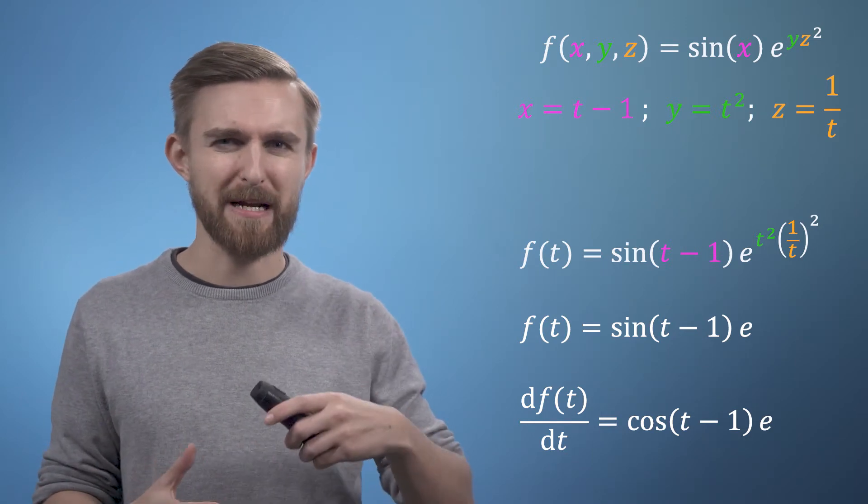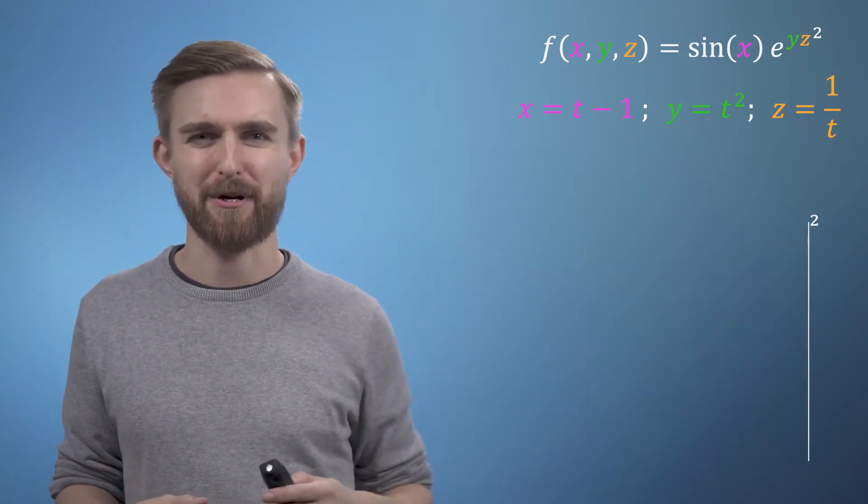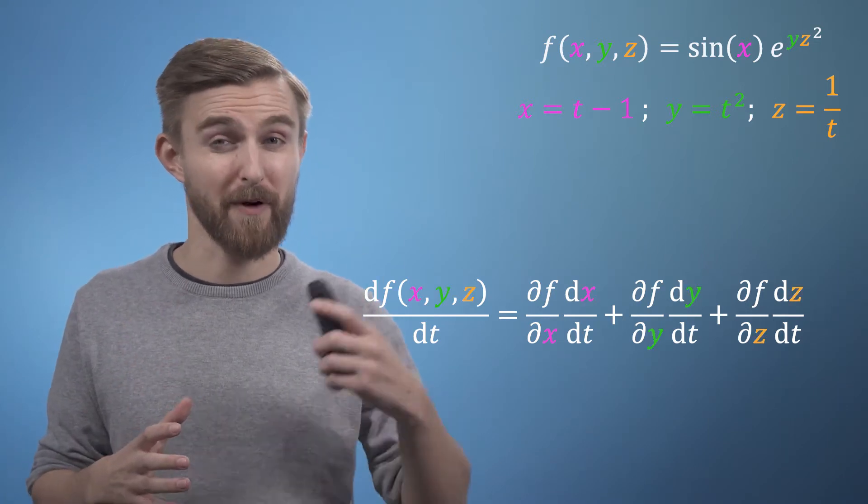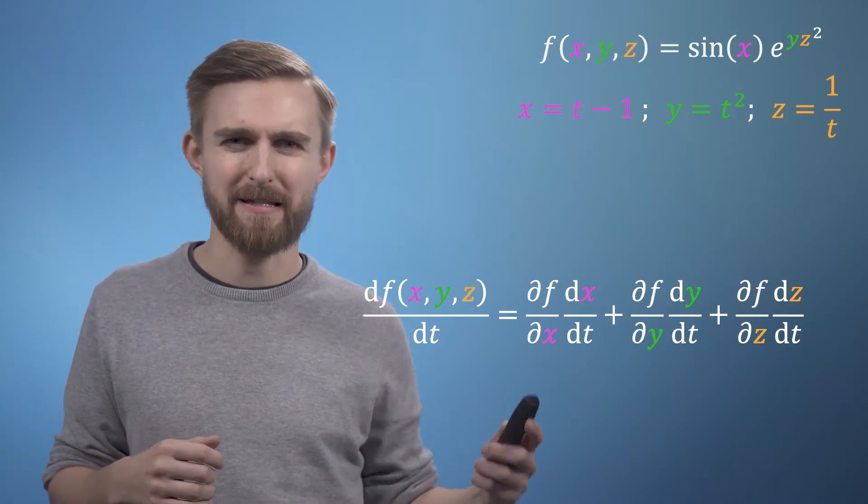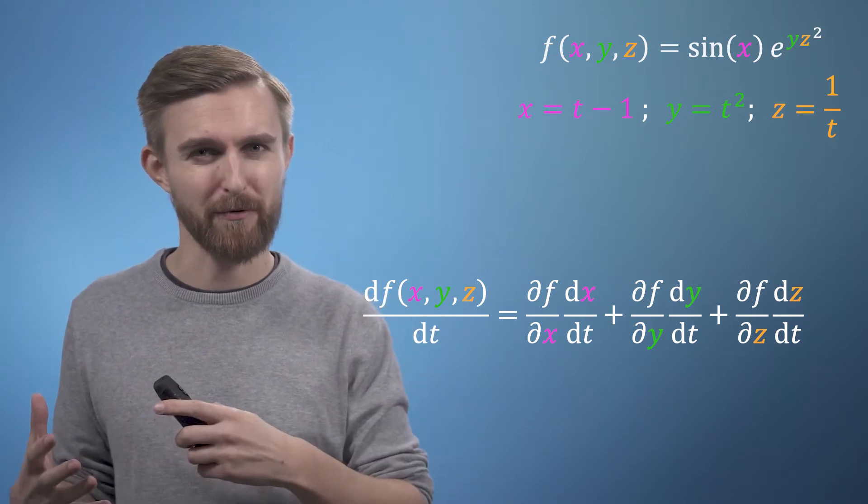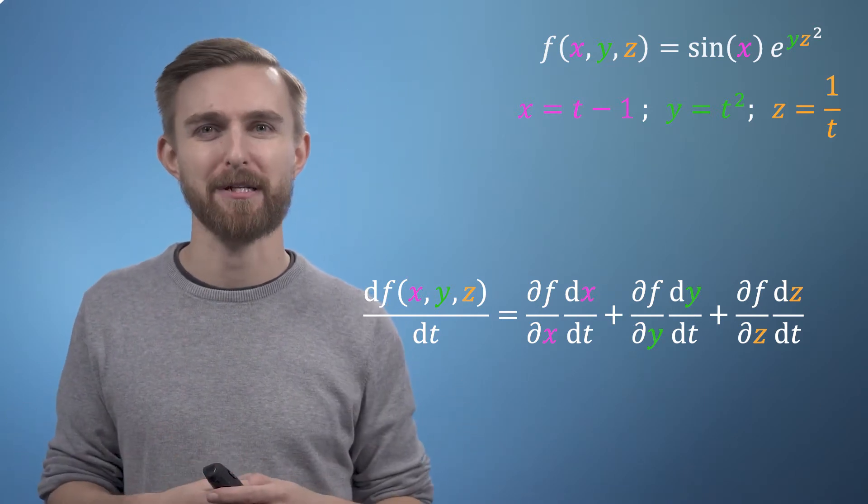where the derivative with respect to our new variable t is the sum of the chains of the other three variables, as shown in this expression. Since we've already got our three partial derivatives of f with respect to x, y, and z, now we just need to find the derivatives of the three variables with respect to t, and we'll have all the things we need to evaluate our expression.